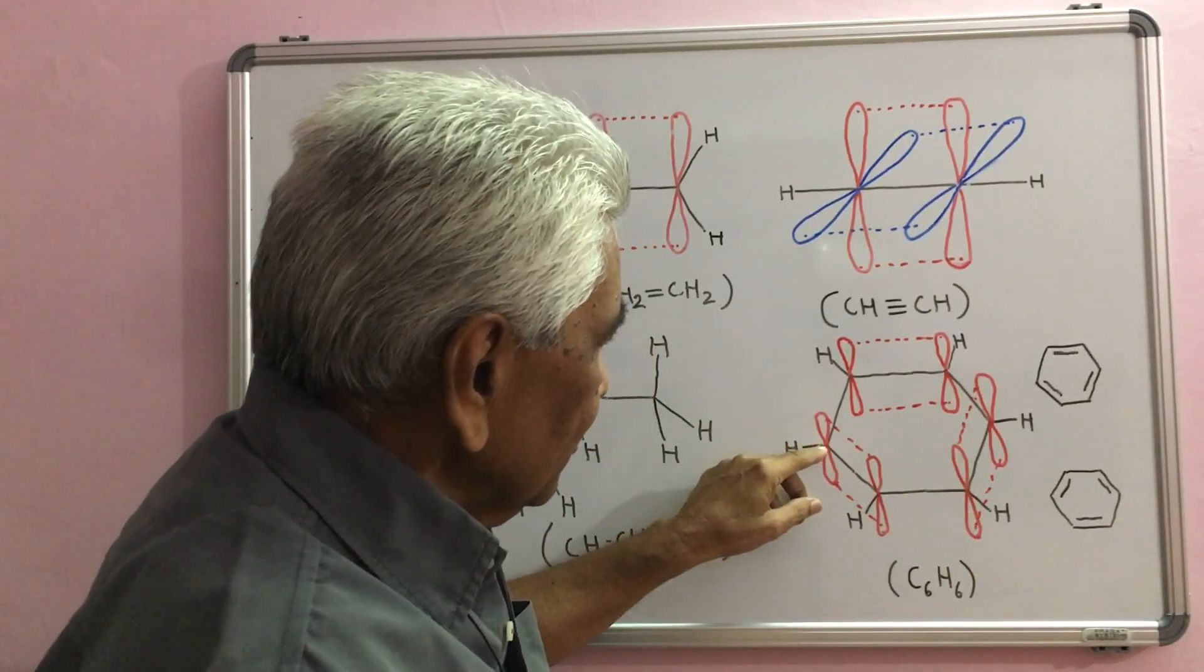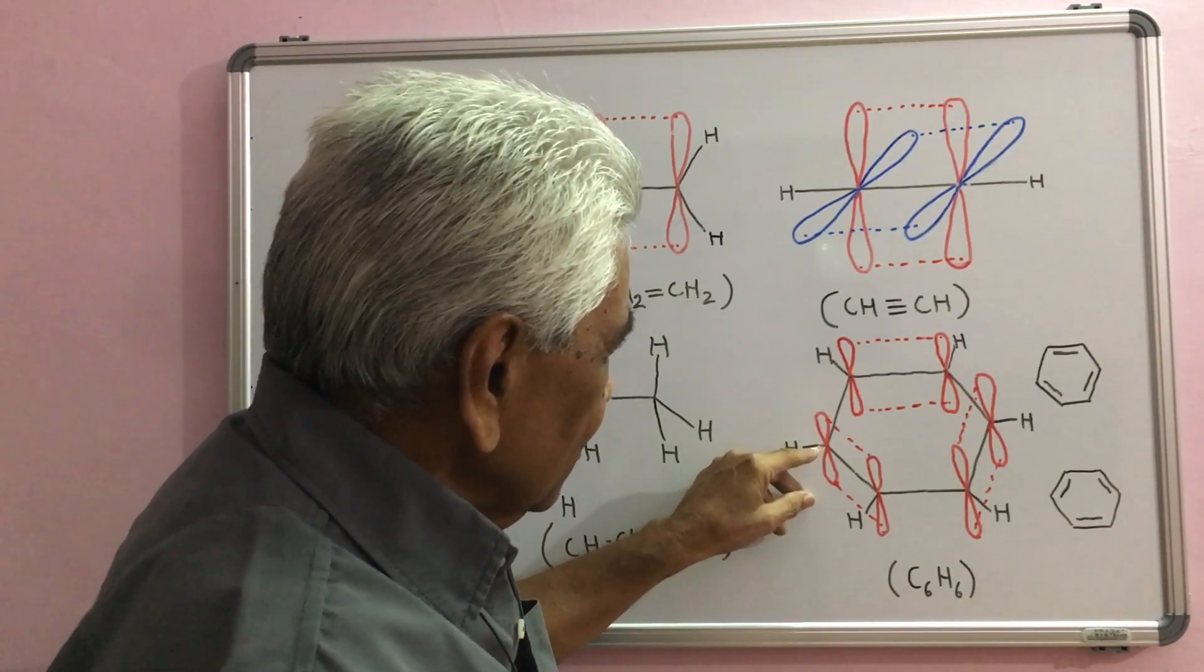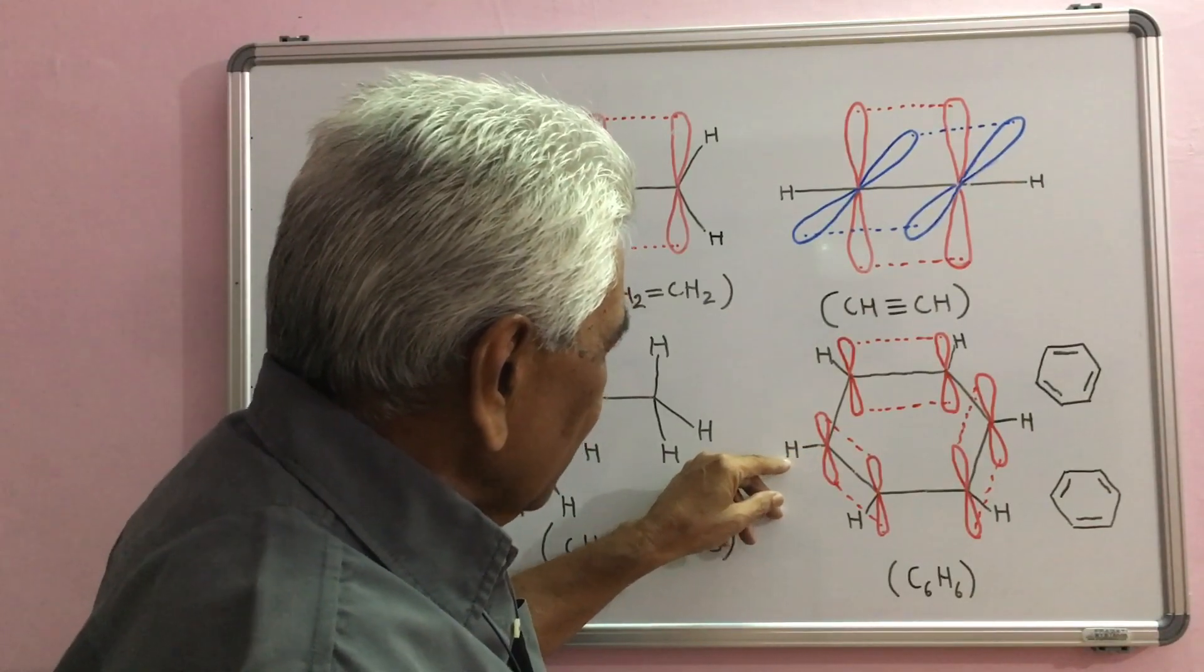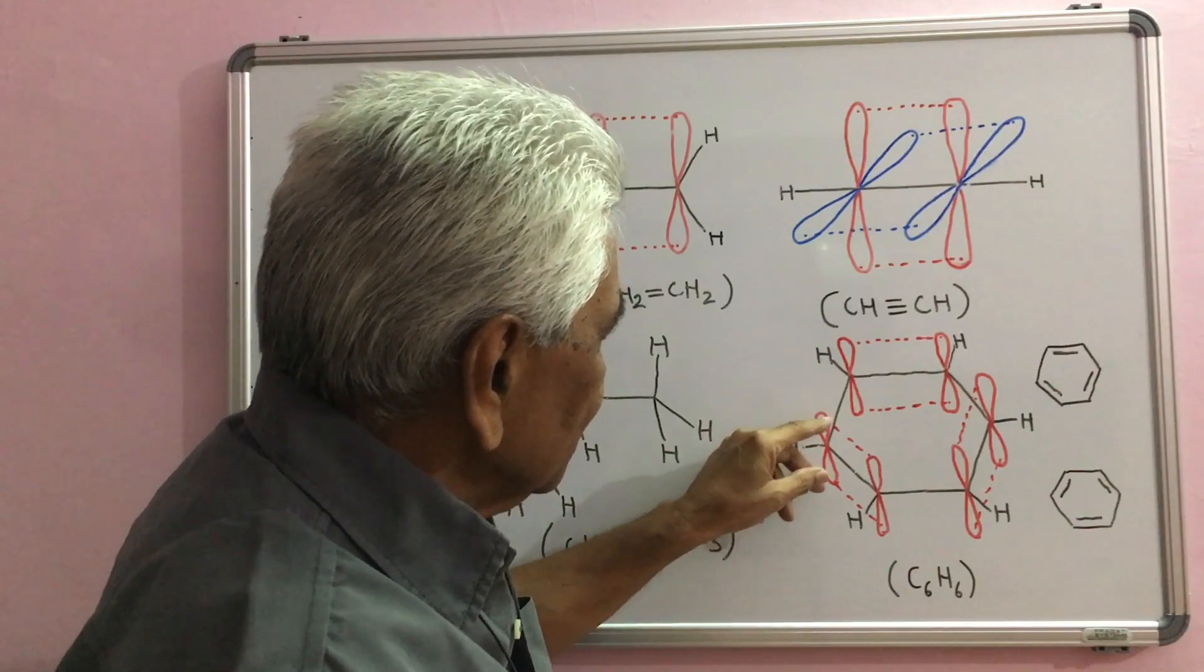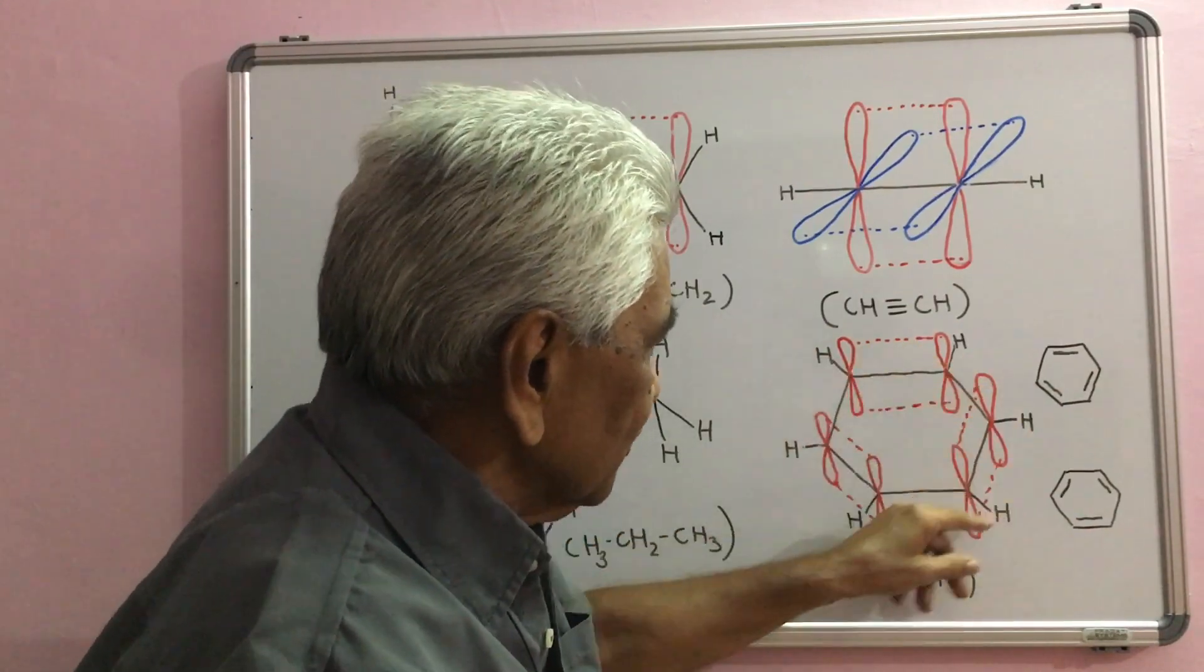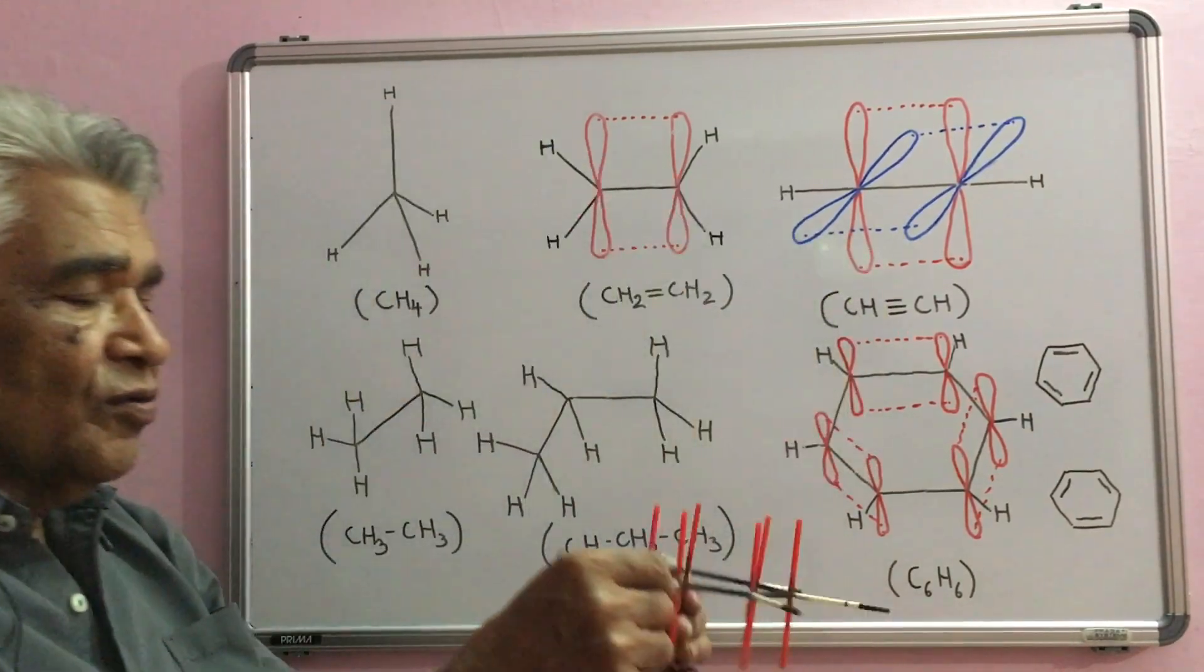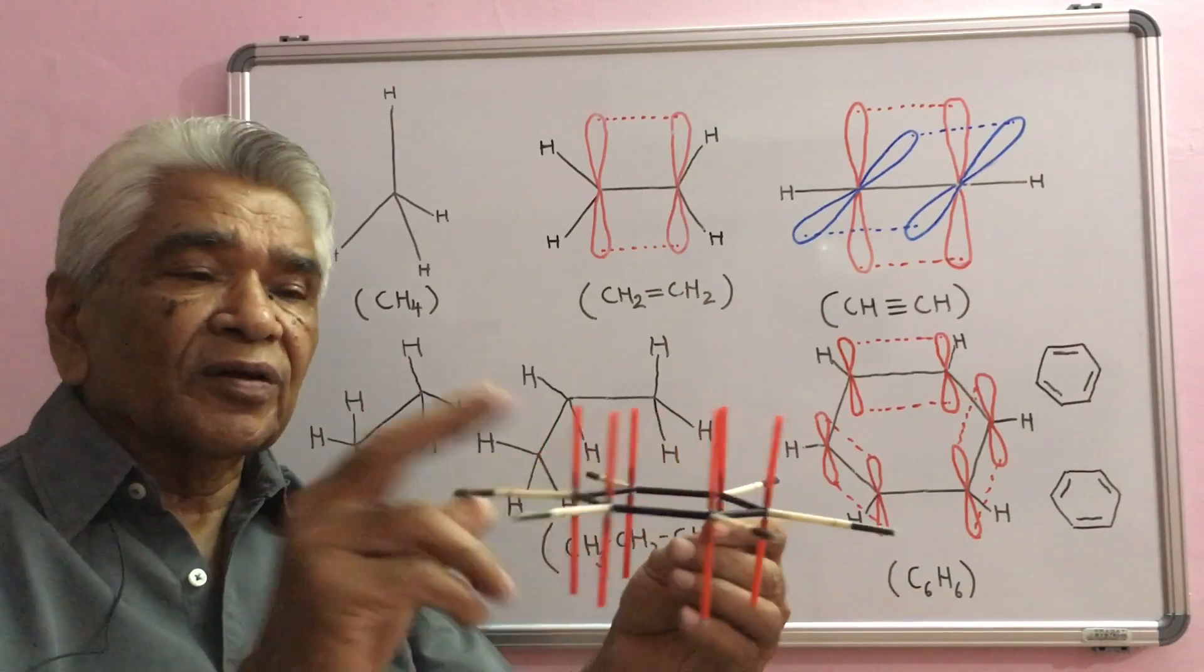Each carbon overlaps - sp2 orbital of each carbon overlaps with s orbital of hydrogen atom forming sigma, six sigma CH bonds. They are in the same plane just like this. They are CH bonds and this is the plane of the ring.